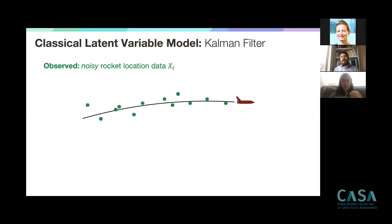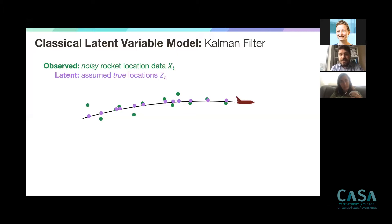Let's stick to the original example and assume we're tracing a rocket in the sky. Instead of observing a smooth trajectory, we observe noisy observations — the green dots are noisy versions of the rocket's true location history, which we call x_t. What we really want to do is infer the underlying true locations (the purple/violet dots), which lie on the smooth curve and are our latent variables z_t.